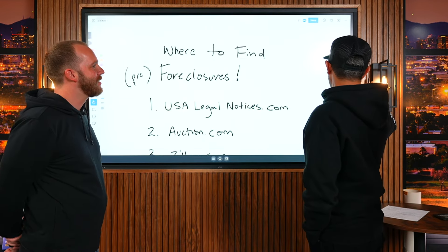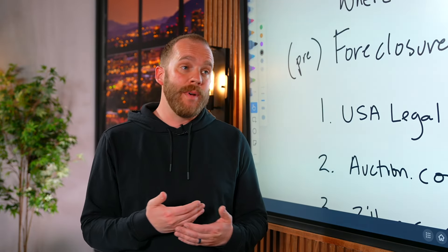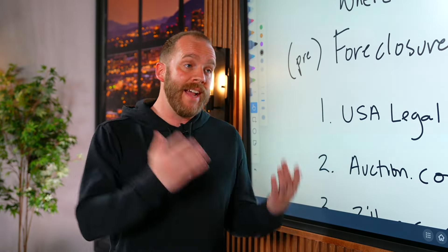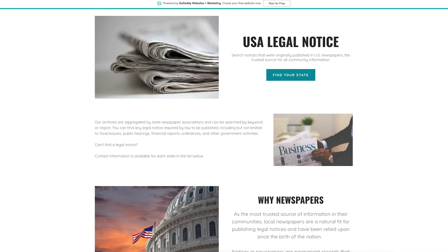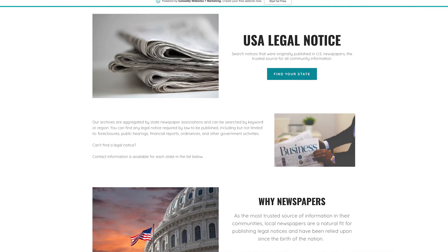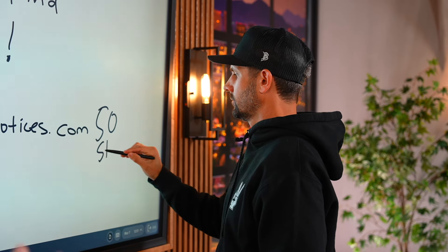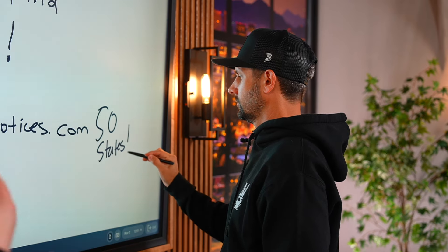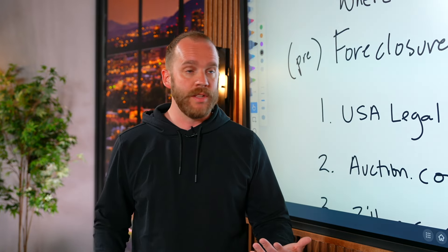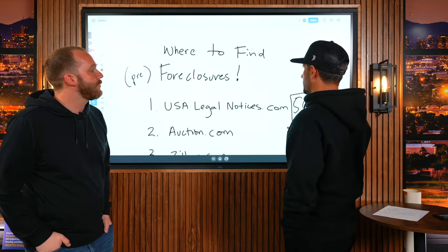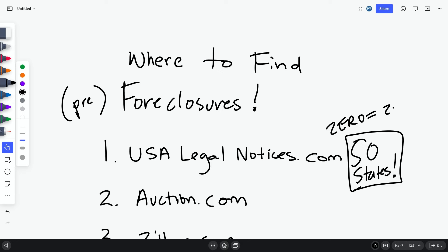So where am I going to find my pre-foreclosure information? The first step is finding that data. The first resource is USA Legal Notices. This applies to all 50 states — no matter where you live, you don't have an excuse. Log on, click your state, put a few keywords in like pre-foreclosure or trustee's sale, and you'll immediately have the notices. They update daily. And that costs absolutely nothing — zero dollars. Zero dollars equals zero excuses.